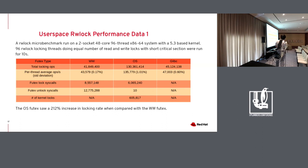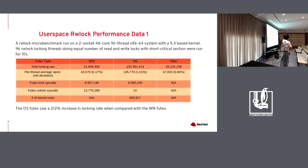This slide shows rwlock performance data. With equal numbers of readers and writers (96 threads each) trying to acquire the lock simultaneously, glibc actually performed better than the speaker's own ww_futex rwlock implementation. The speaker noted that glibc underwent a major rewrite of its rwlock about two years prior — before that, the speaker's implementation performed better. The OS futex is still significantly faster than both.